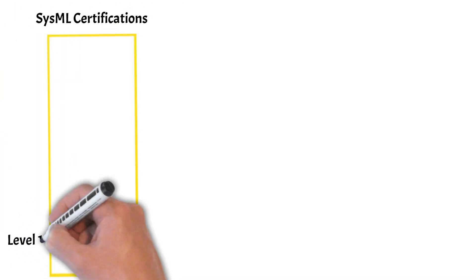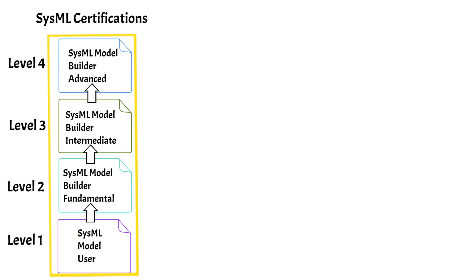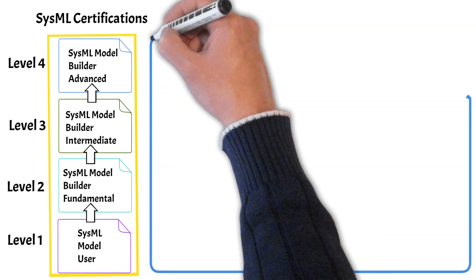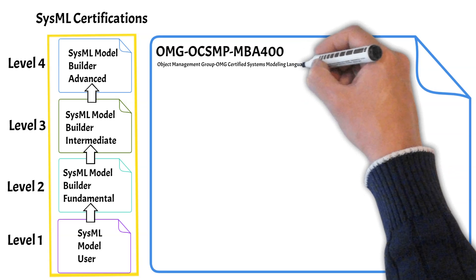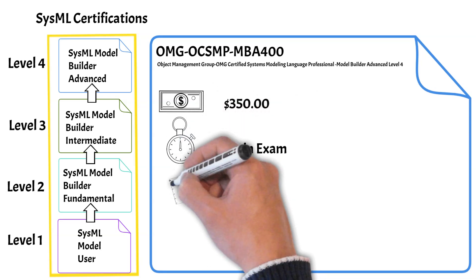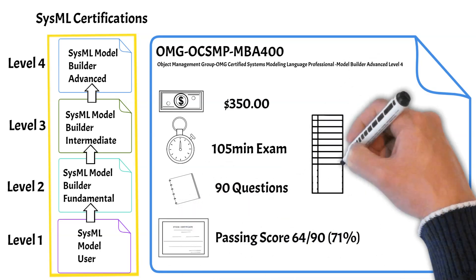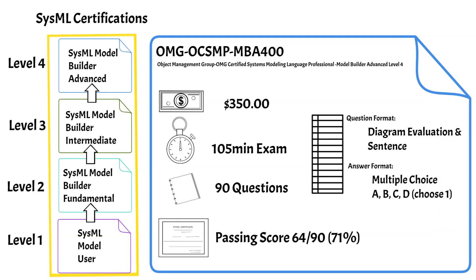Once you've passed the level three exam, you can take the level four Model Builder Advanced exam. This exam is more conceptual and high-level than level three — more similar to the level two exam — while levels one and three are more syntax-driven. The passing score is 64 out of 90, or 71%. In the presenter's experience, level four was easier than level three but harder than level two.